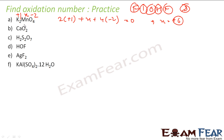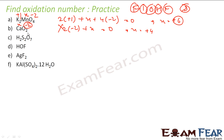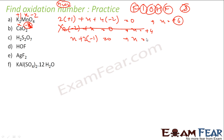Let's take CaO₂. Not a free element, not an ion. Oxygen — wait, we can't blindly apply minus 2 here. There's an exception: oxygen is minus 1 in peroxide compounds like H₂O₂. So oxygen is minus 1 here. Calcium is x. Sum rule: x plus 2 times minus 1 equals 0, so x equals plus 2. Calcium is plus 2.